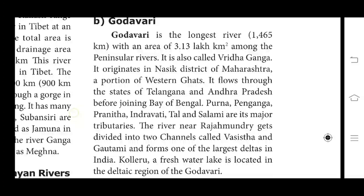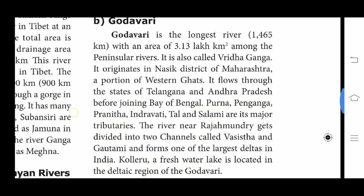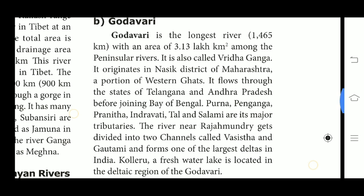Kolleru is a freshwater lake located in the deltaic region of Godavari. Godavari is India's second longest river after the Ganga. It flows east for 1,465 km, spanning the states of Maharashtra, Telangana, Andhra Pradesh, Chhattisgarh and Odisha. It forms one of the largest river basins in the Indian subcontinent and is also called the Vridha Ganga.